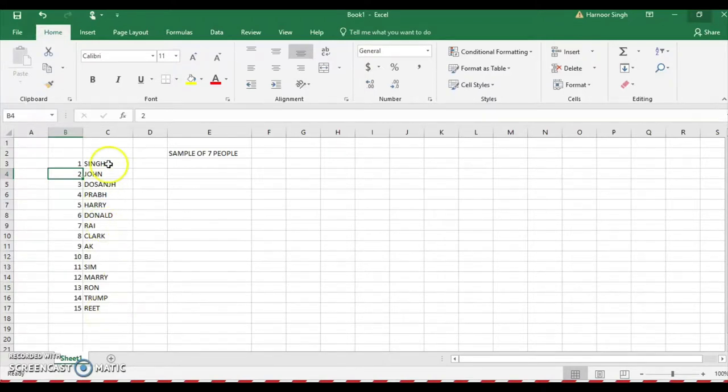I noted the numbers 1 to 15 as you can see over here, and I need to take out a sample of seven people in a random sample. What you need to do is come over here, click insert function, and type RANDBETWEEN.